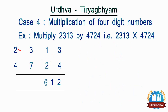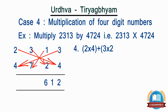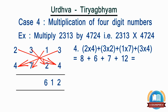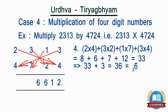Step 4: take all 4 digits of the numbers and multiply diagonally as shown on the screen, i.e. 2 by 4, 3 by 4, 3 by 2, 1 by 7, and 3 by 4, the sum of which becomes 33, and add the carried over number, i.e. 3, to it. So the total becomes 36. We will retain 6 as the fourth digit of the answer and carry 3 to the left.